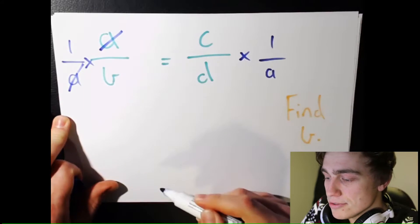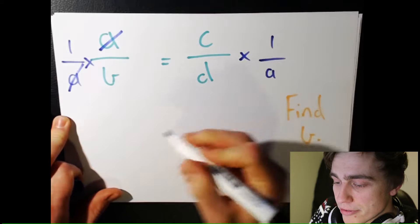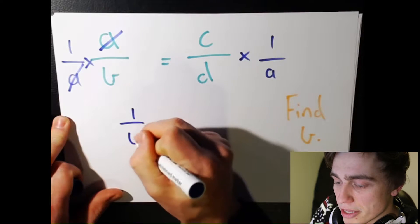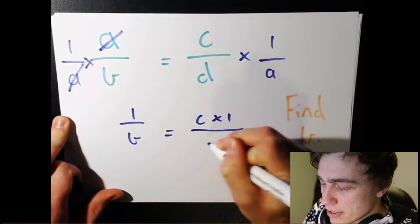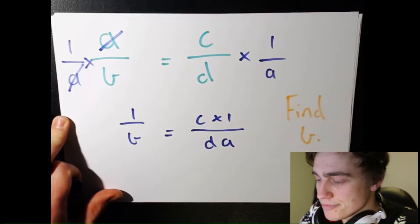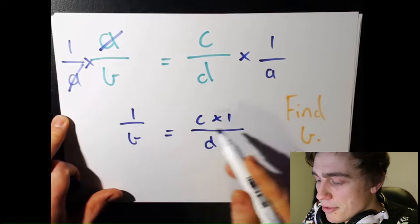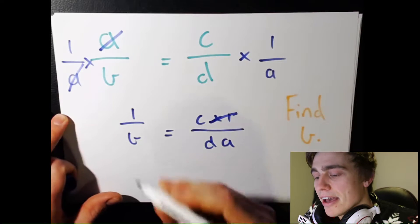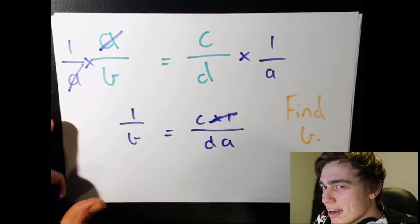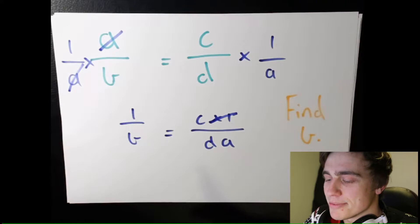Over here the A's... what is C times 1? Again, it's just itself. So I'll get rid of that. Now I've got the 1 over B. I can't give my answer in 1 over. That's a bit silly.